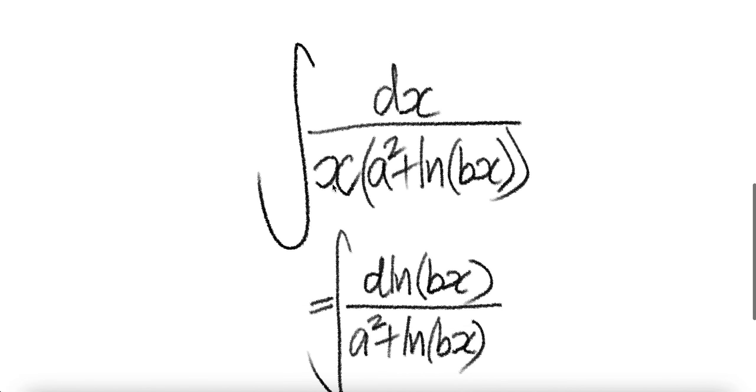We're going to push 1 over x into dx. Notice that the derivative of ln(bx) is 1 over bx times the derivative of bx, which is b. So 1 over bx times b—the b's cancel—gives us 1 over x. So 1 over x dx is in fact equal to d ln(bx).